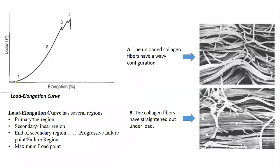The load-elongation curve has several regions that characterize the behavior of the tissue. The first is the toe region. The elongation reflected here is believed to be the result of a change in the wavy pattern of collagen fibers. In this region, the tissue stretches easily without much force, because the collagen fibers get straightened up. They were wavy and now they become straight and lose their wavy pattern while sliding occurs between the fibrils. As elongation continues, the stiffness of the tissue increases.